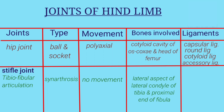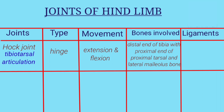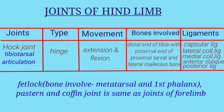Next is the hock joint, which consists of tibiotarsal articulation. The type of joint is hinge joint and movement is extension and flexion. Bones involved are the distal end of the tibia with the proximal end of proximal tarsal and lateral malleolus bone. Ligaments are capsular ligament, lateral collateral ligament, medial collateral ligament, anterior oblique ligament, and posterior ligament.